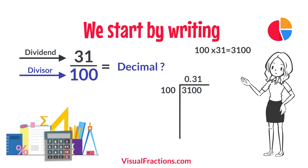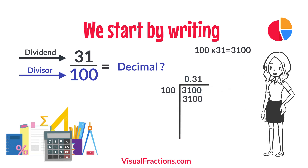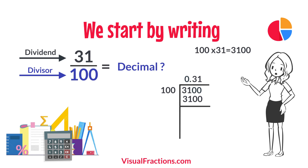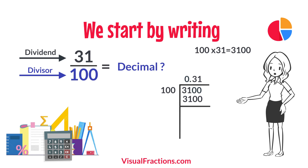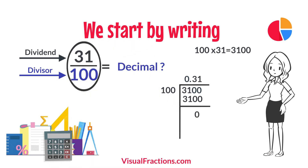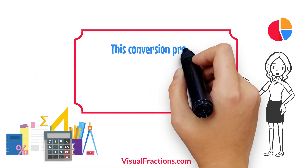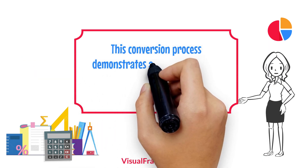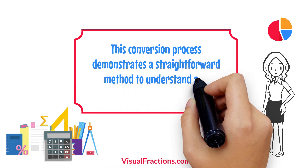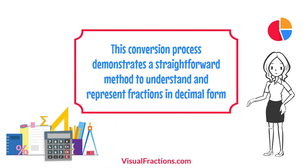Multiplying 31 by 100 gives us 3,100. When we subtract 3,100 from 3,100, we get a remainder of 0. So there we have it — the fraction 31 one-hundredths converted to a decimal is 0.31. This conversion process demonstrates a straightforward method to understand and represent fractions in decimal form.